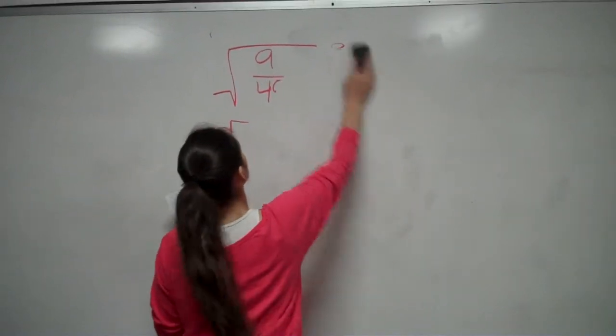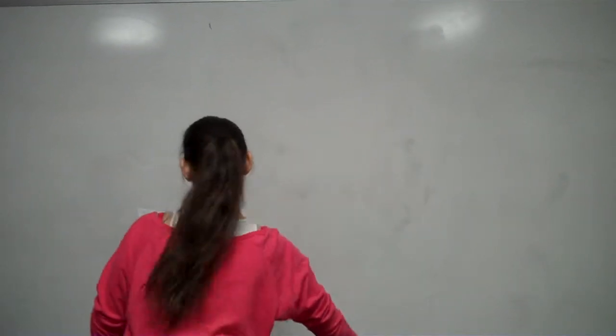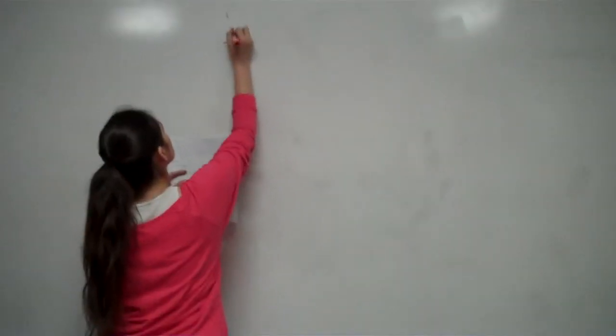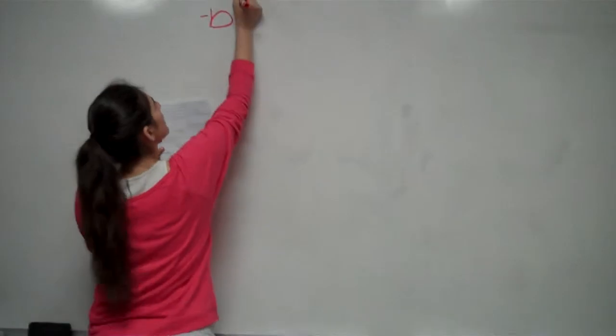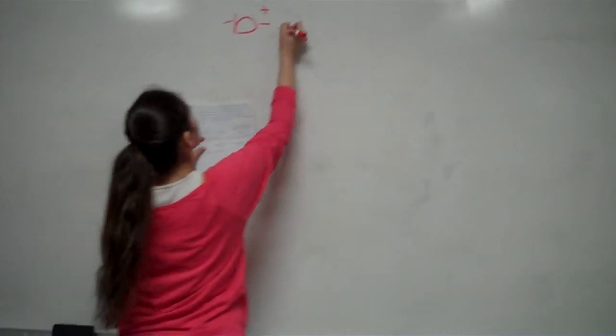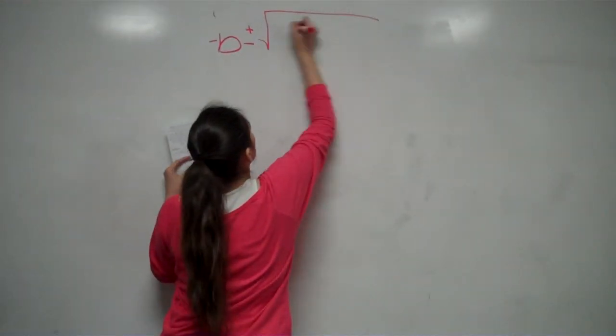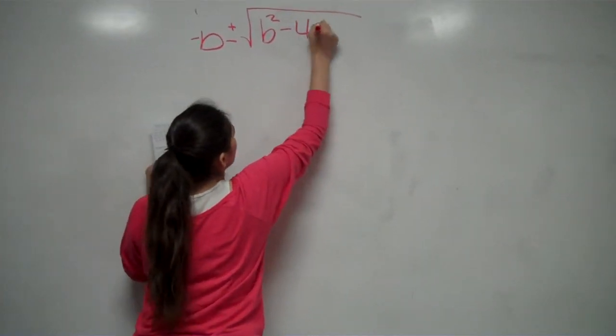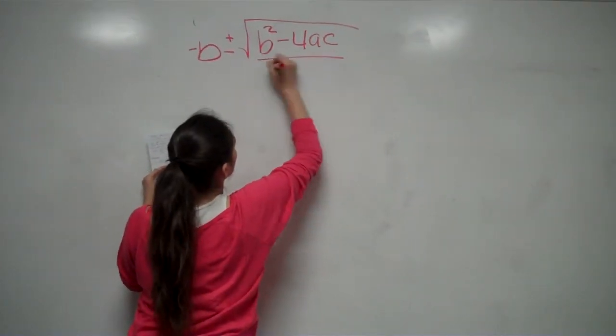We will try using the quadratic formula. The quadratic formula is negative B plus or minus the square root of B squared minus 4AC, all over 2A.